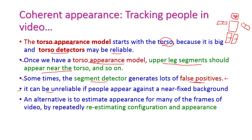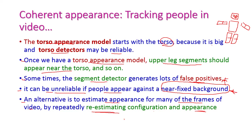Sometimes the segment detector generates false positives because it can be unreliable when people appear against a fixed background. If people stand in front of a fixed background, the system can generate more false positives. The alternative is to re-estimate the configuration and appearance across many frames of the video repeatedly, so that even when a person is standing on a fixed background, we can find what they are actually doing.